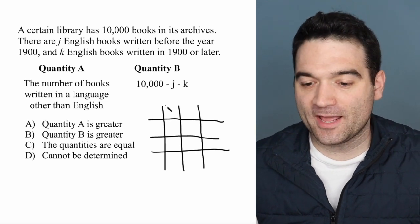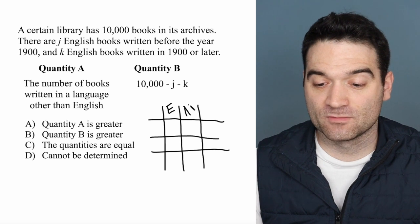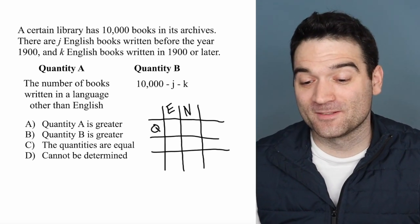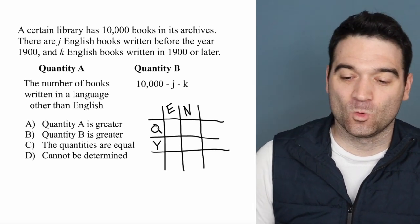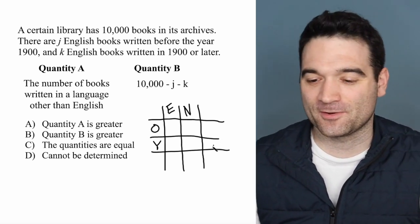The categories of books that we have: we either have English or not English, and we either have old books or young books, right? So English, not English, old, young. And a book can be old English or old non-English, et cetera.